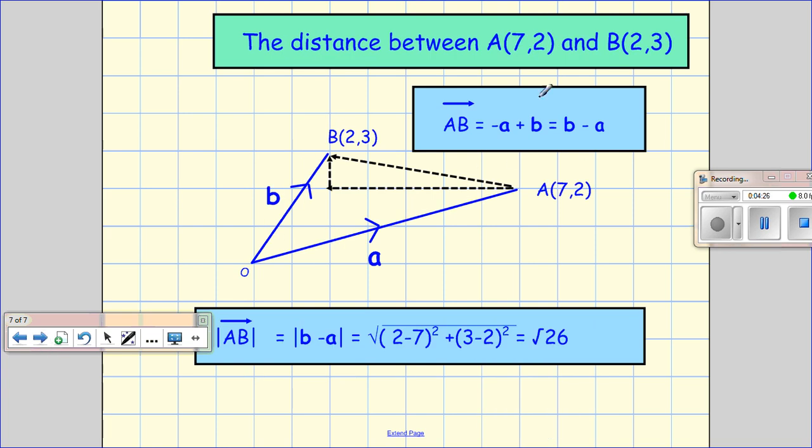So if you look at this question, we've got a point at (7,2) and a point at (2,3). We find that AB is B minus A, and I want the magnitude of that line. And what I'm really looking for is the magnitude of this line.